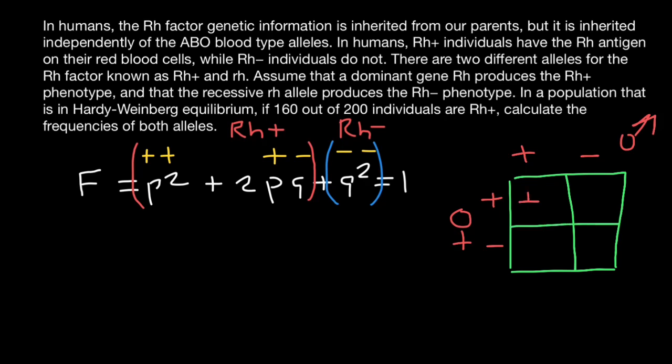So positive positive here, positive negative here, positive negative here, and negative negative here. As you see, two Rh positive parents would produce three quarters of the Rh positive children, but one quarter would be Rh negative.